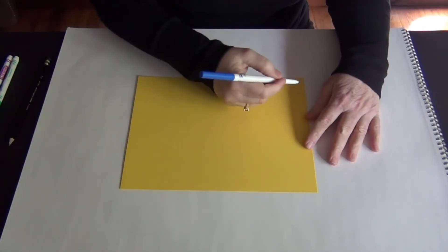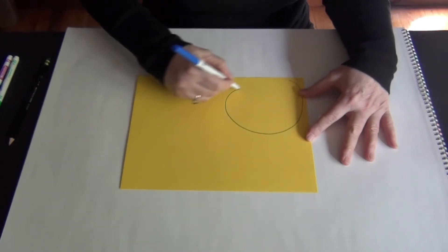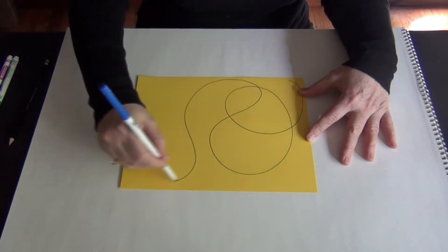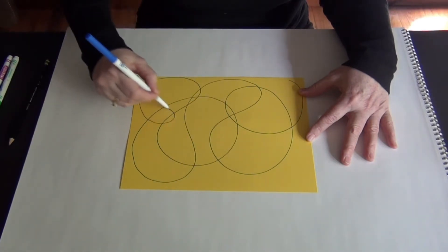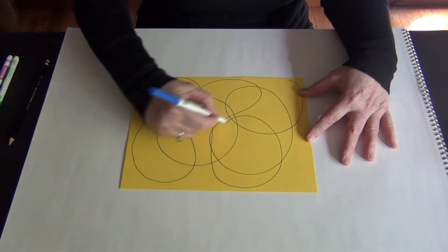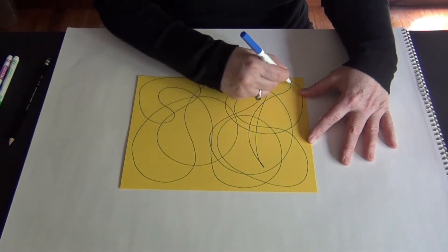You take your pencil or your pen and you start just making loopy lines. Keep your arm really loose and just kind of go for it here. Just make something kind of loopy and there you go.